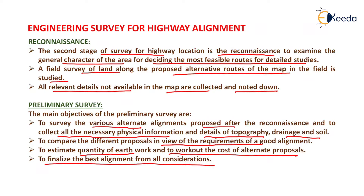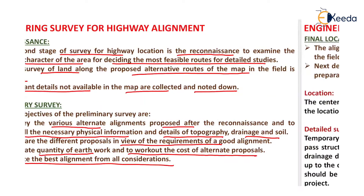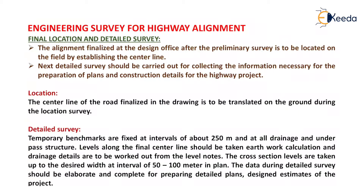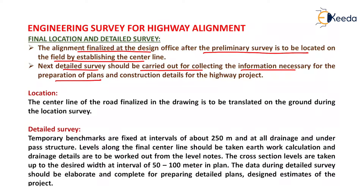After considering all the parameters — that is the cost of the alignment, the quantity of earthwork, and the various other parameters — we finalize the best alignment in the preliminary survey. After the preliminary survey, we go for the final location and detailed survey. The alignment finalized at the design office after the preliminary survey is to be located on the field by establishing the centerline. Detailed survey should be carried out for collecting the information necessary for the preparation of plans and construction details for the highway project. In detail surveying, calculation of material estimation, cost estimation, design, planning, etc. are done along the finalized alignment.